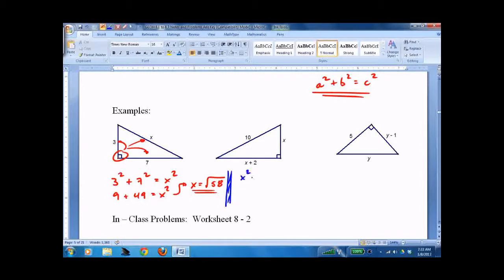X squared plus, don't forget your parentheses, X plus 2 squared equals 100. I would pause the recording. Try and do that on your own. Now I'll knock it out. X squared plus X squared plus 4X plus 4 equals 100. Combine the heck out of everything. 2X squared plus 4X minus 96 equals 0. Divide everything by 2.